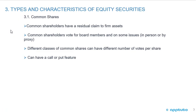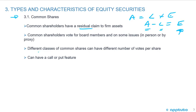Types and characteristics of equity securities. The first type we're going to look at is common shares. Common shares have a residual claim to firm assets. We know the balance sheet: assets equals liabilities plus equity, so assets minus liabilities equals equity. If a company was to sell all the assets and pay all the liabilities, what is left over belongs to the common shareholders — that's why we call it a residual claim. Common shareholders vote for board members on some issues, in person or by proxy. Different classes of common shares can have a different number of votes per share, and common shares can also have a call or a put feature — option-type features which give the holder the right, but not the obligation, to do certain things.